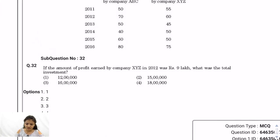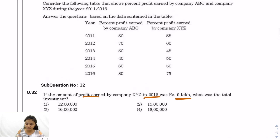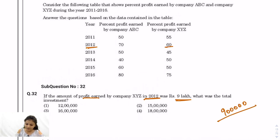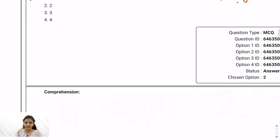Question 32: If the profit earned by XYZ is 9 lakhs and XYZ had 60% profit in 2012, then total investment = 9 lakhs / 0.60 = 15 lakhs. So the answer is 15 lakhs.